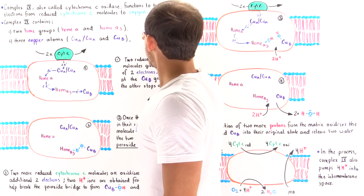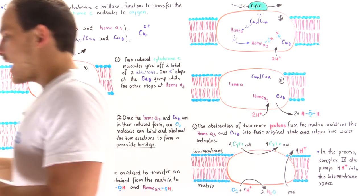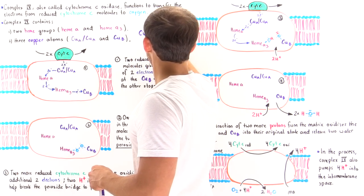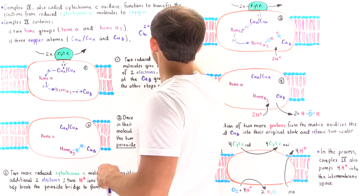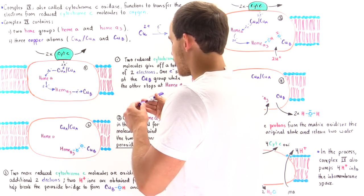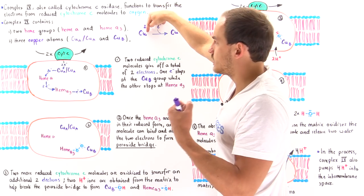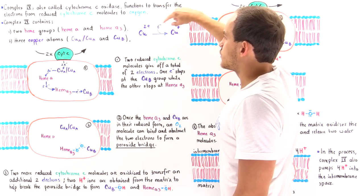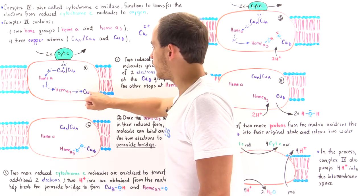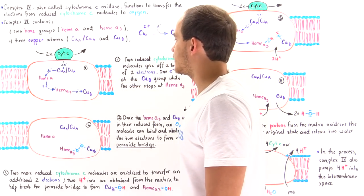Copper is initially in its 2+ state. When it gains a single electron, it is reduced into copper+. Any time the copper in this diagram abstracts or binds an electron, it goes from its oxidized form to its reduced form. This is exactly what happens when copper B gains an electron, and also when copper A gains an electron.